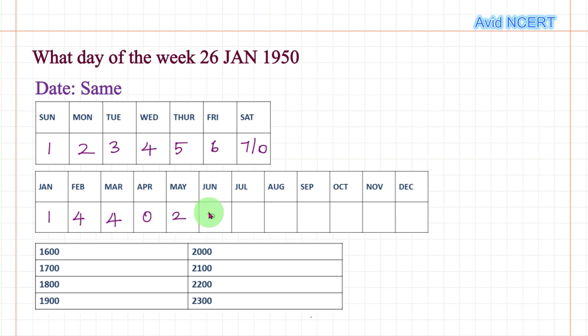And 144 plus 2, so it is 1, 4, 6. This is the code for the month.